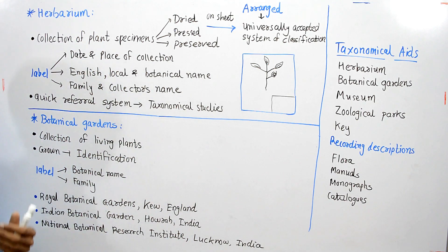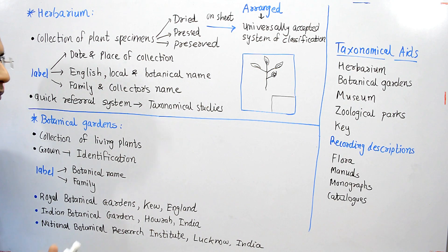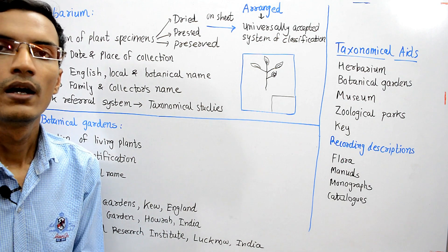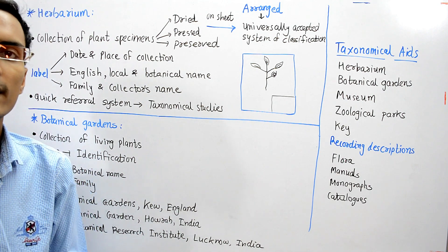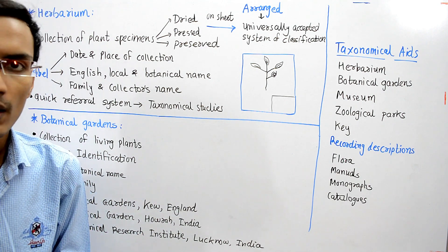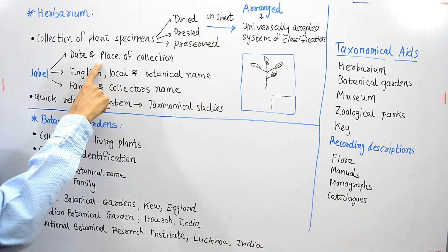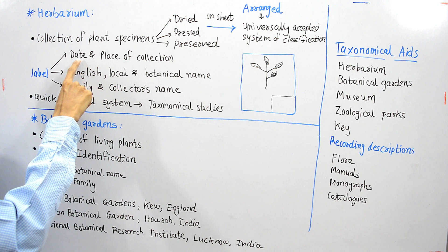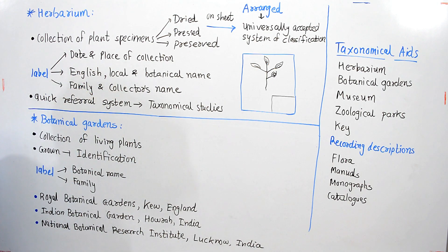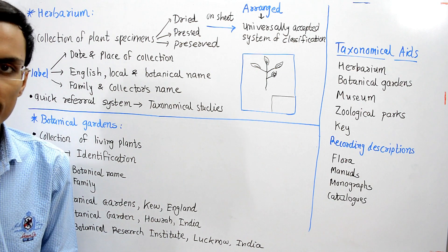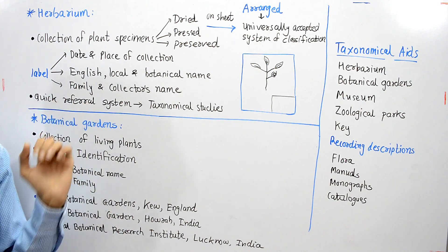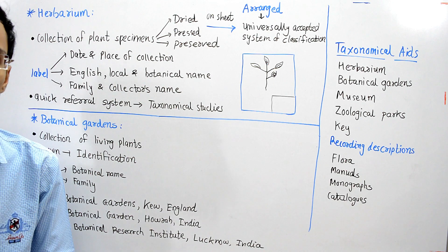The herbarium provides a quick referral system for taxonomical studies. If you want to study one plant and want to know where this plant can be found, you go to the herbarium and you can find the place where this plant was collected. So you can easily refer to the plant species.